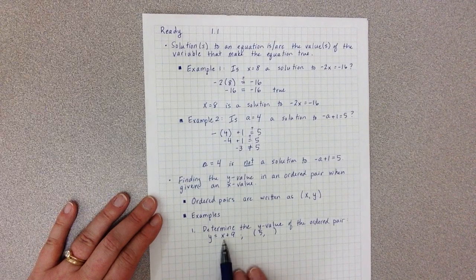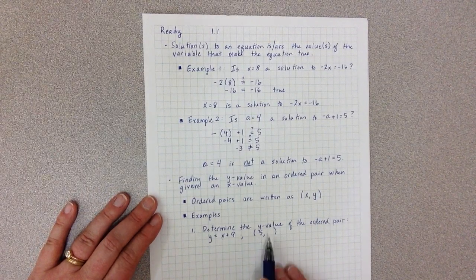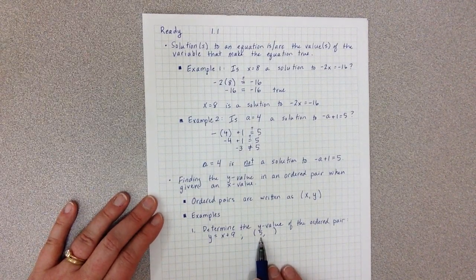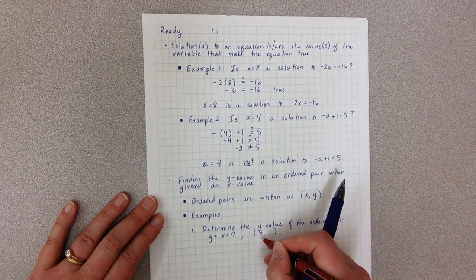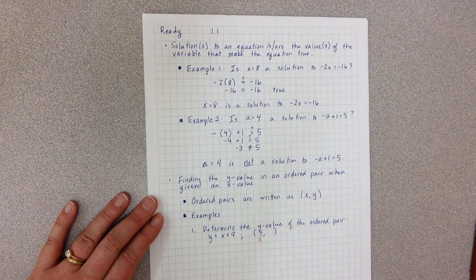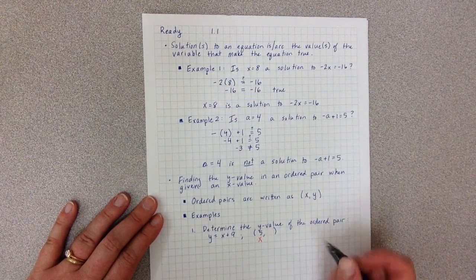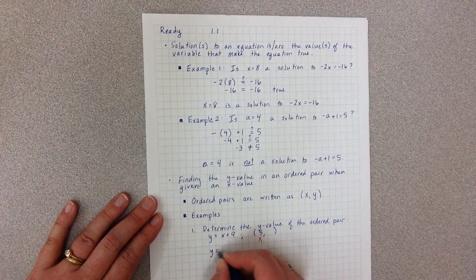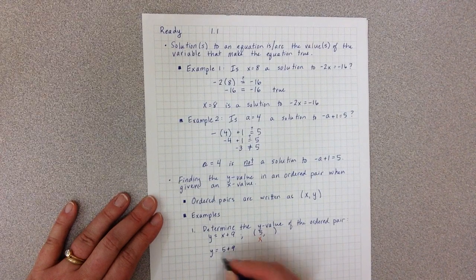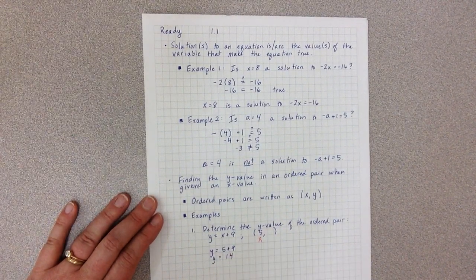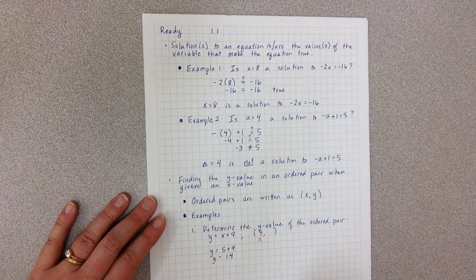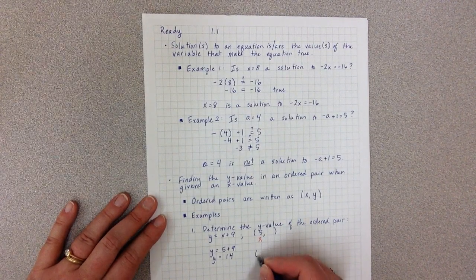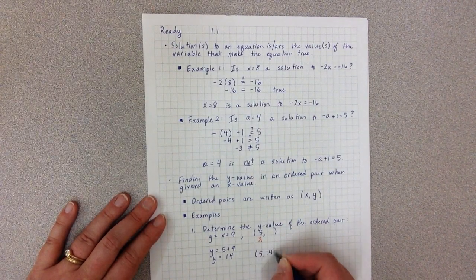So I have two variables here, an x and a y, but they give me one right here. This variable right here is the x. What I need to find is the y. So I'm going to plug the 5 in for the x. Simplify. And now I can write my answer as that ordered pair. So 5, 14.